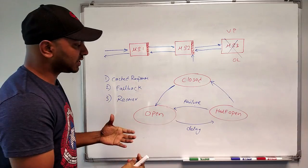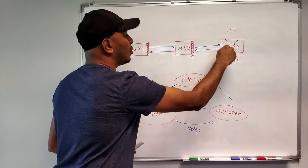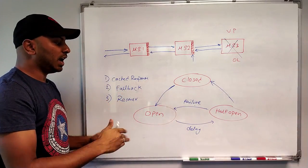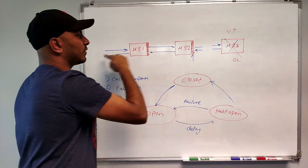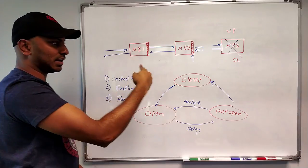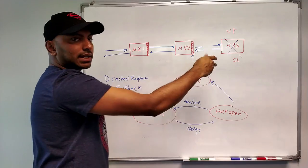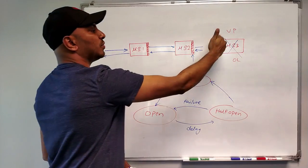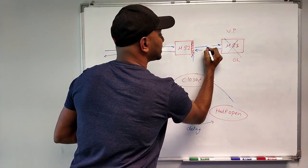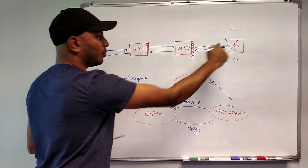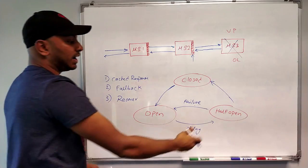What does 'closed' mean? Closed means the whole loop is closed — everything is working fine. What does 'open' mean? Open means the link is open, i.e., we can't complete the whole cycle. In the circuit breaking pattern, open means the connection is disconnected for now and the whole cycle is not finished.